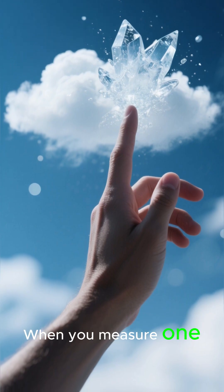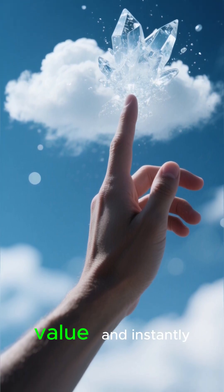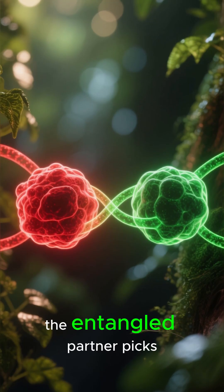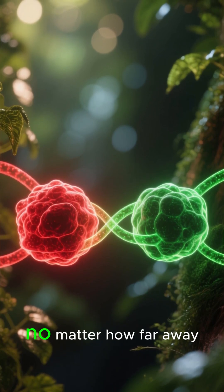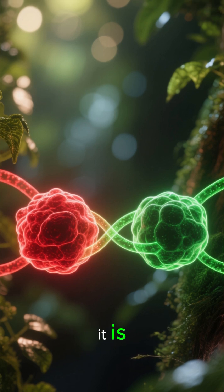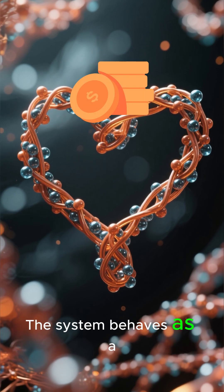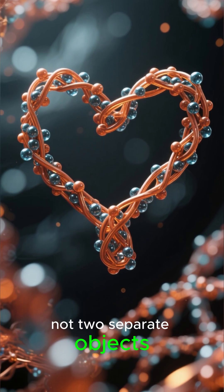When you measure one, you force it to pick a definite value. And instantly, the entangled partner picks the opposite or matching value, no matter how far away it is. The system behaves as a single whole, not two separate objects.